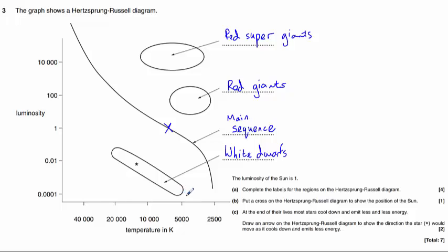Well, it will remain a white dwarf, eventually cooling to become a black dwarf when it's giving out no light. If it's cooling down, it must be moving to the right. Emitting less energy, less luminosity, it must be moving down. And we need to draw an arrow that is diagonally down and to the right.